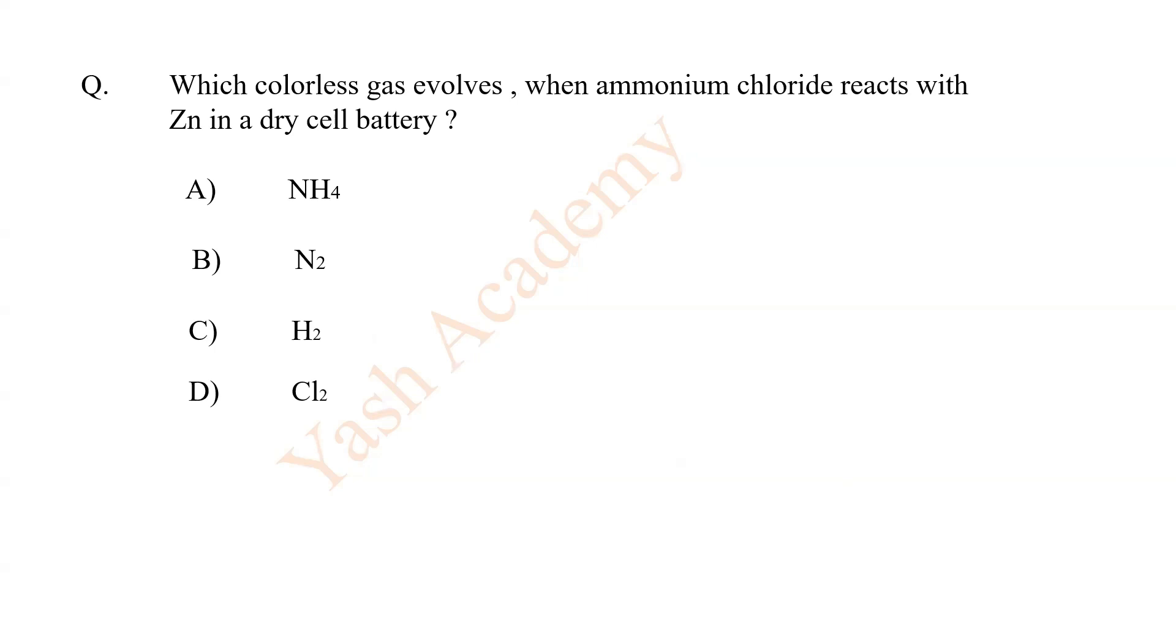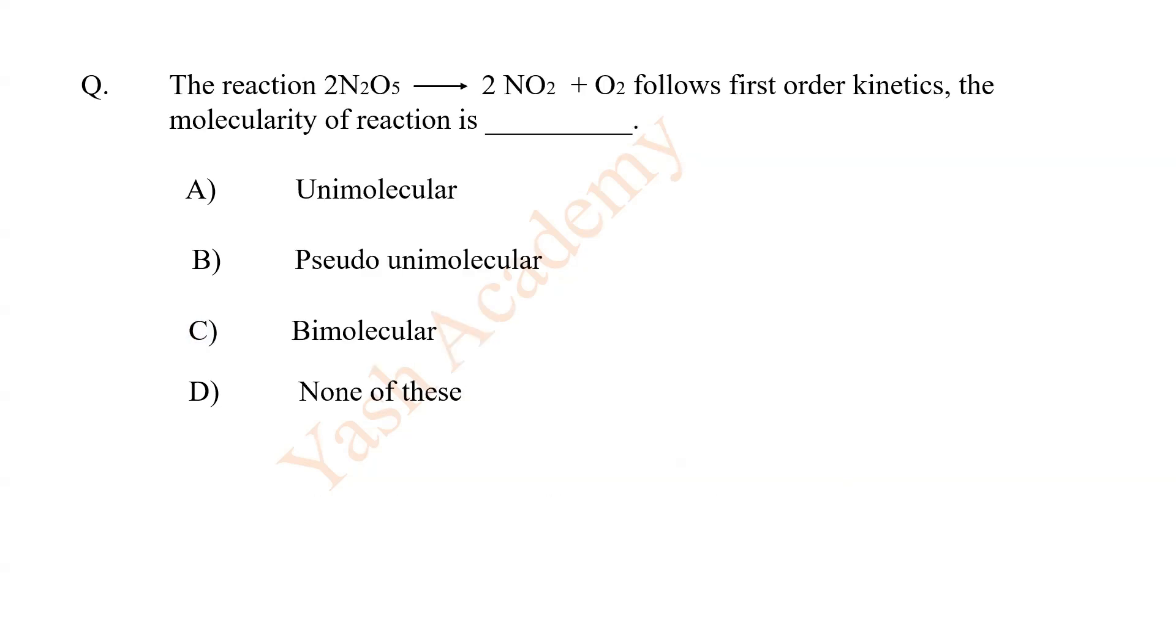Which colorless gas evolves when ammonium chloride reacts with zinc in a dry cell battery? Hydrogen. The reaction 2N2O5 gives 2NO2 plus O2 follows first order kinetics. The molecularity of reaction is C, bimolecular.